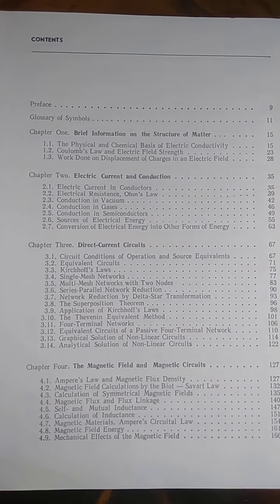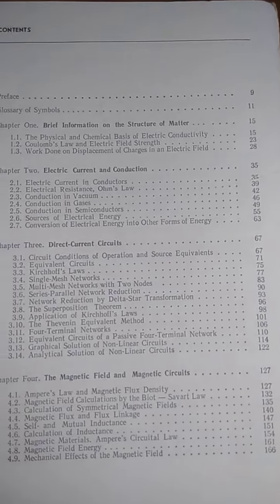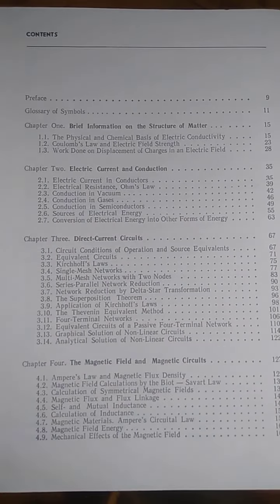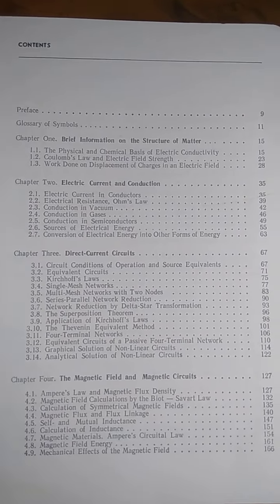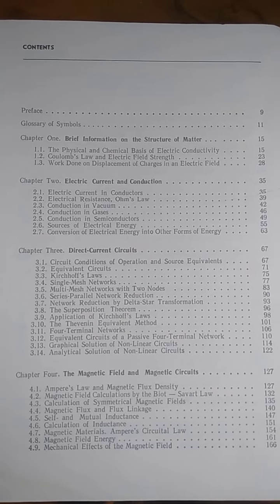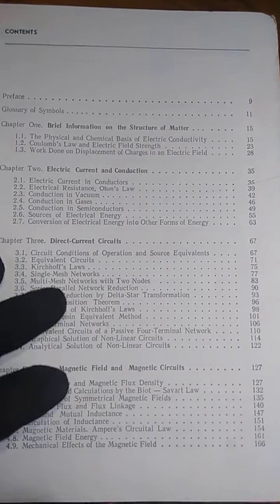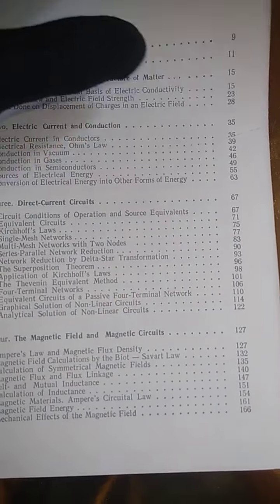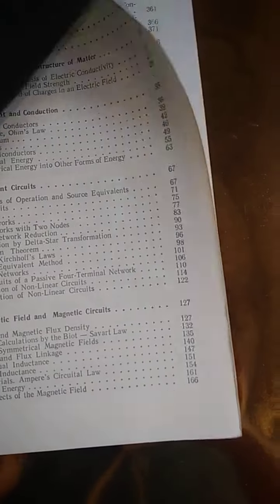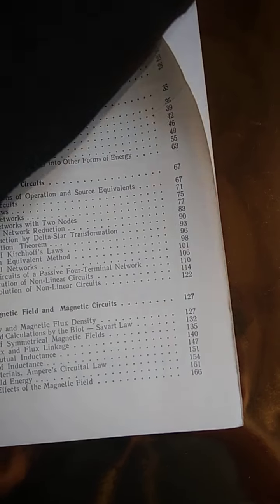So this book actually goes from the basic to advanced in electricity. The first chapter is brief information on the structure of matter, electric current and conduction, direct current circuits, the magnetic field and magnetic circuits.